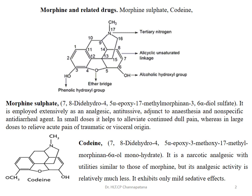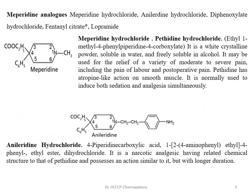The second compound is codeine. Codeine is similar in structure to morphine, but the only difference is at the third position: morphine contains a phenolic hydroxyl group, whereas codeine contains a methoxy group at the third position. The IUPAC name of codeine is 7,8-dihydro-4,5-alpha-epoxy-3-methoxy-17-methyl-morphinan-6-alpha-ol monohydrate. It is also a narcotic analgesic, but its analgesic activity is relatively much less and it exhibits only a mild sedative effect.